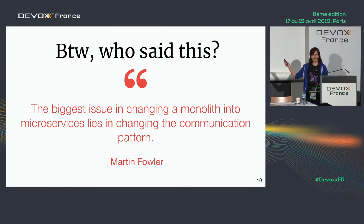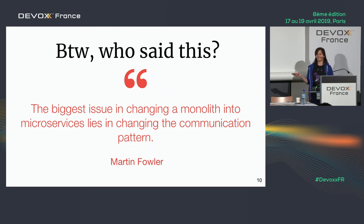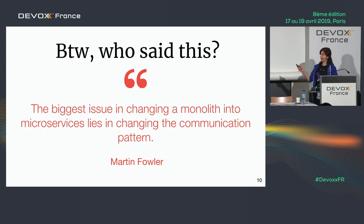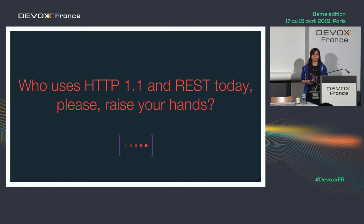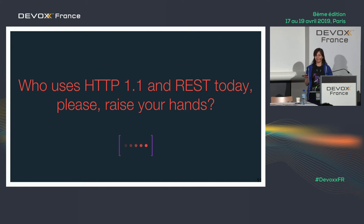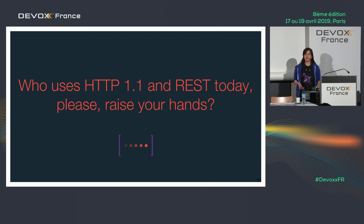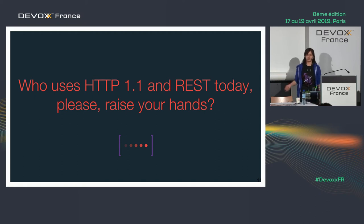That quote is from Martin Fowler — a pretty famous person. If you are using your microservices with HTTP 1 and REST, almost everyone who raised hands for microservices is using it today. HTTP 1 and REST is a common pattern for microservices for many years. Even at Wix we're also using it. So what's wrong with it? This solution works, it's okay, we're all happy with it. So why should we do something else?